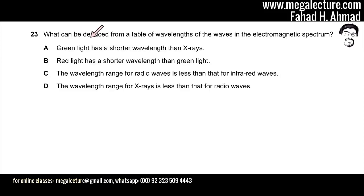The following question reads: what can be deduced from a table of wavelengths of the waves in the electromagnetic spectrum? The first statement A is that green light has a shorter wavelength than X-rays.